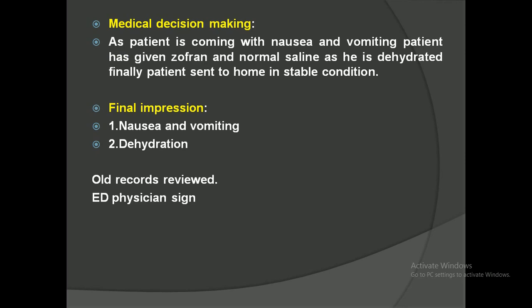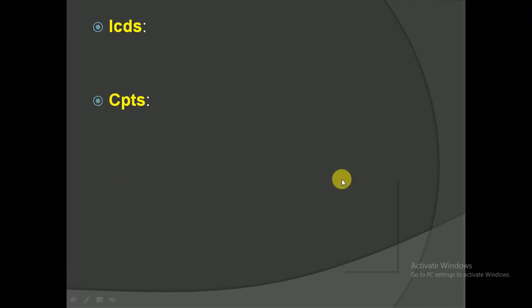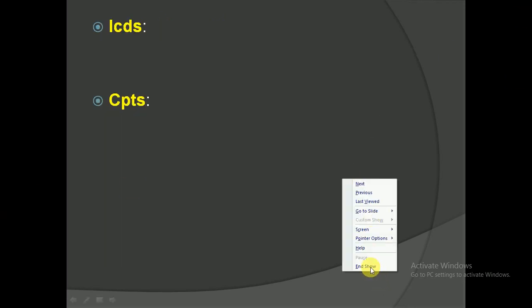Coming to the medical decision making: as the patient is coming with nausea and vomiting, the physician has given Zofran and normal saline because the patient will be dehydrated. The final impression is nausea, vomiting, and dehydration. The physician will review the old records, and we need to check the ED physicians. Now we will code the ICDs.